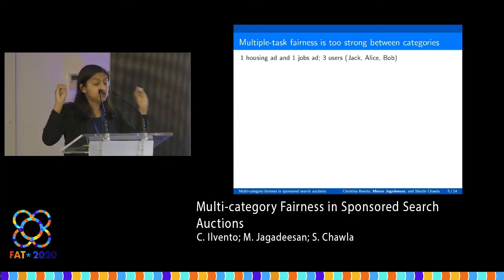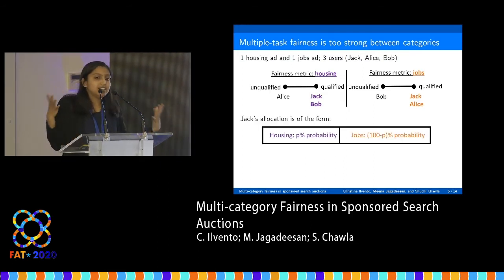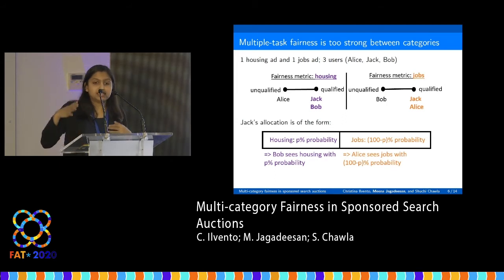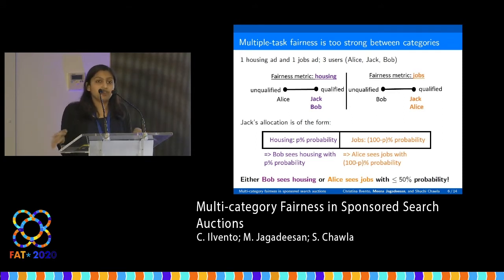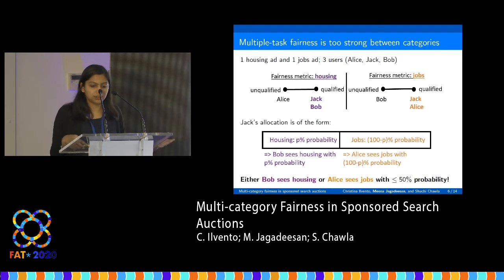To see that multiple task fairness can be too strong when advertisers are in different categories, consider a housing ad and a jobs ad and three users. Jack is qualified for both housing and jobs, but Bob is only qualified for housing and Alice is only qualified for jobs. Jack's ad slot will be split between housing and jobs with some probabilities. Because Jack and Bob are equally qualified for housing, Bob must see housing ads with the same probability as Jack, and Alice must see job ads with the same probability as Jack. So one of these probabilities must be at most 50%, which can be made arbitrarily small — making multiple task fairness too stringent to be useful for any of the users.